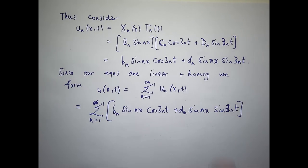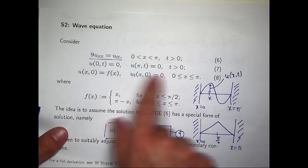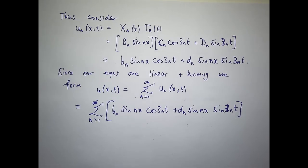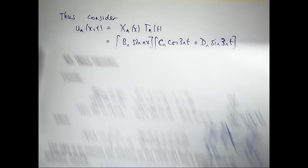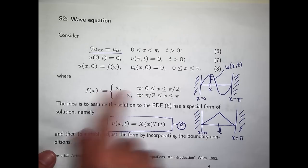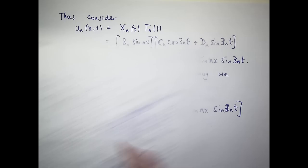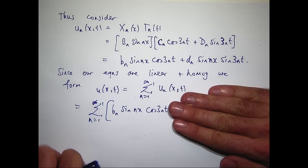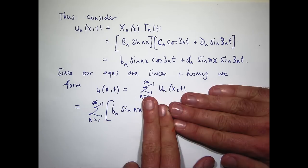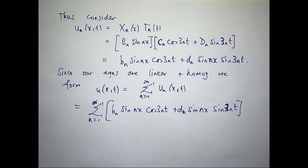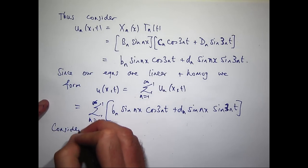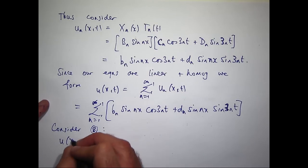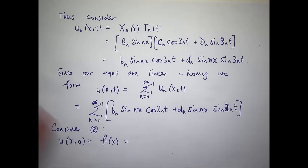To calculate b sub n and d sub n, I'm going to use the initial conditions. We haven't used any form of conditions 8 yet. Let's consider the first condition: go to the general form and plug in t equals 0. The sine term becomes 0 so it disappears, and the cosine becomes 1. What does that look like? A Fourier sine series. I'll leave it in the f of x form and worry about the particular form later.